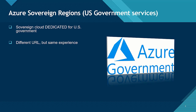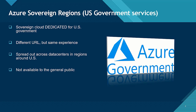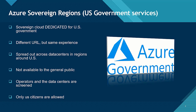Other than the physical separation and the different URL, the experience is pretty much the same as the Commercial Azure Cloud. Azure Government is spread out across data centers in regions around the United States, and it is only available to U.S. Government cloud customers. This instance of Azure is not available to the general public. The operators and the data centers are screened, and only United States citizens are allowed to work in those data centers.